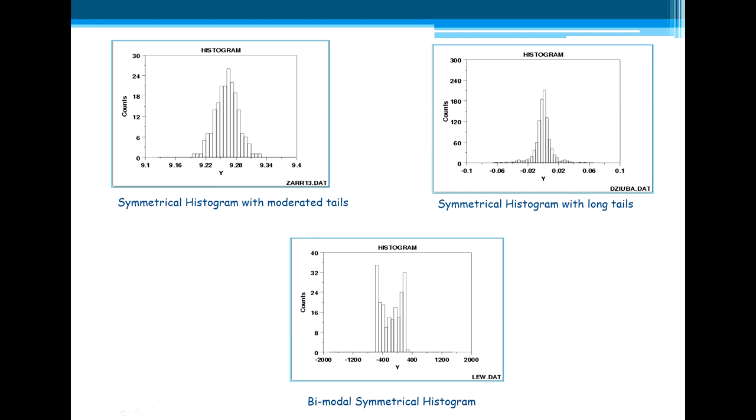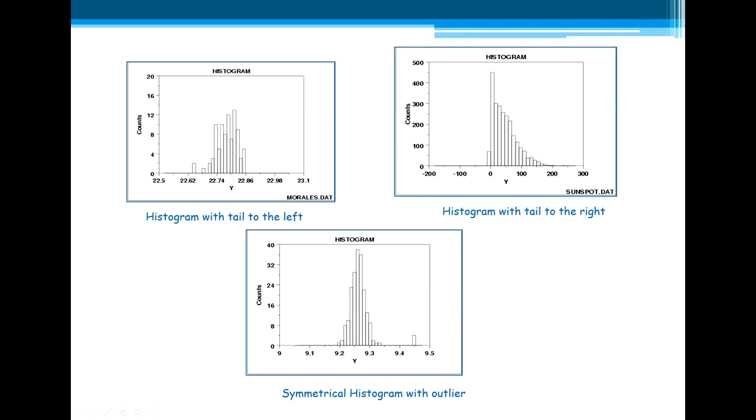Just to finalize, here are some common shapes of the distributions: symmetrical histogram with moderate tails, symmetric histogram with long tails, bimodal symmetric histogram, histogram with tail to the left, tail to the right, and with outliers, etc.